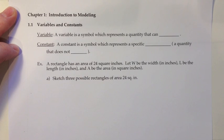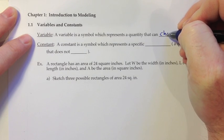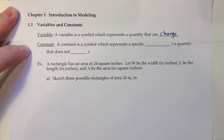Chapter 1, Introduction to Modeling. In section 1.1, we're going to look at the topic of variables and constants. Variable: A variable is a symbol which represents a quantity that can change. Constant: A constant is a symbol which represents a specific number, a quantity that does not change.